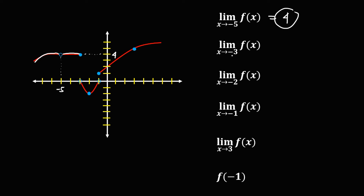Then for this limit as x approaches negative 3, this one is negative 3 on the graph. The limit is equal to negative 2.